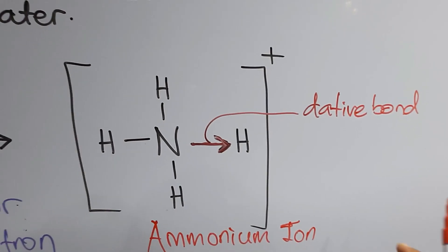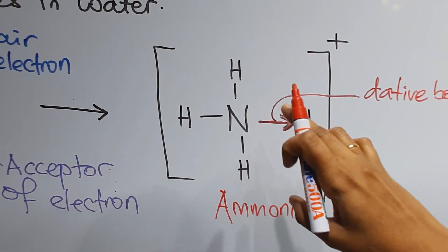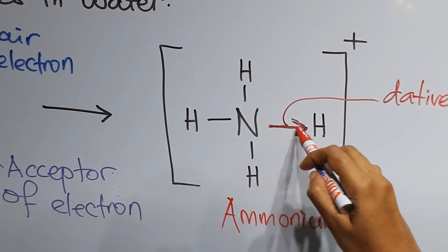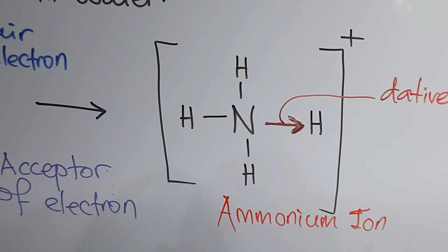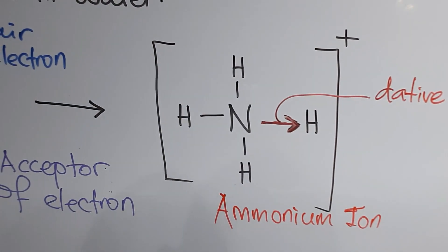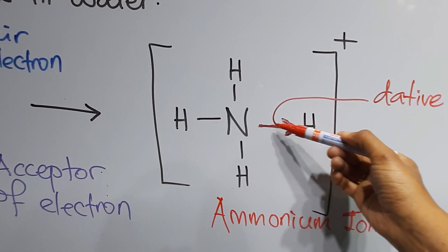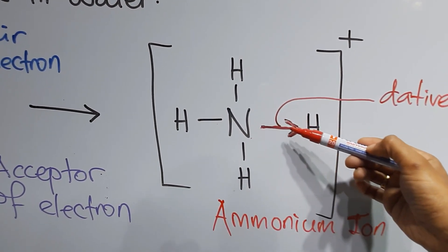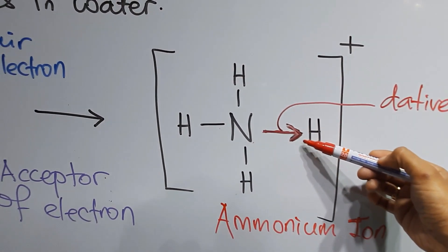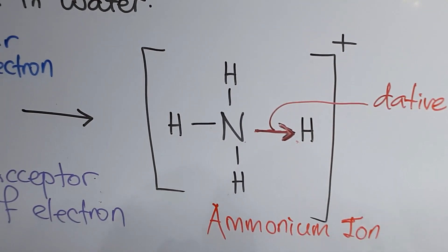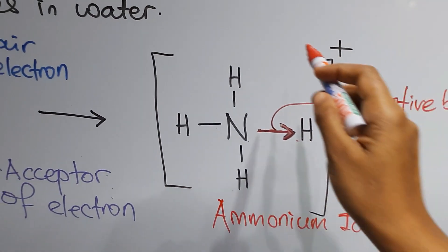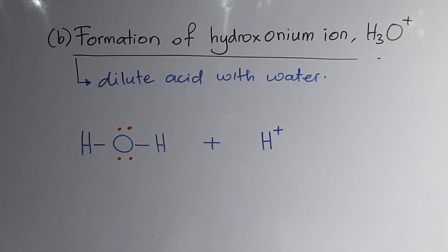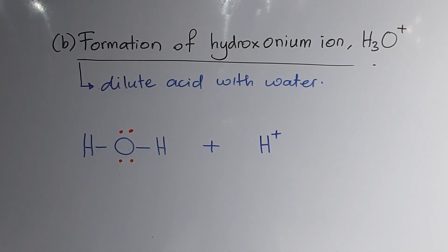During the formation of the ion due to the dative bond, you have to use an arrow to show the location of the dative bond. When you show the arrow this way, it indicates that the nitrogen atom is sharing its lone pair with hydrogen, and the whole ion will be positively charged.